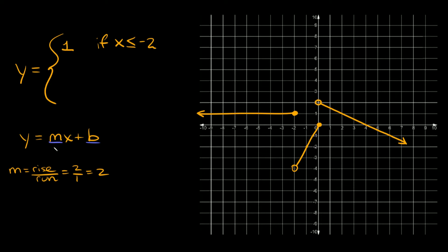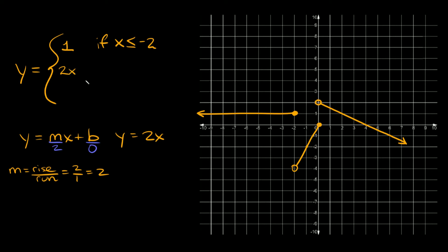The slope is equal to rise over run, so it's two over one which equals two. The slope is two. Our y-intercept — where the line hits the y-axis — is right here at the origin, at zero. So we plug in zero for b, giving us y is equal to two x plus zero, which we can just write as y is equal to two x.